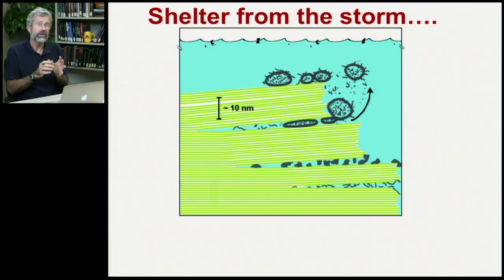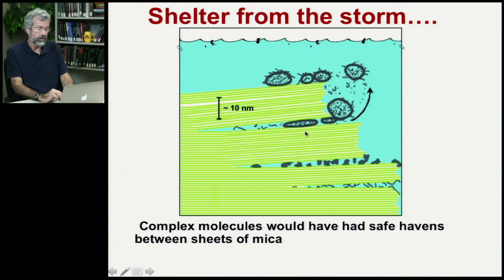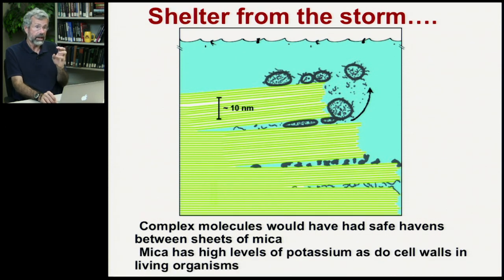So where would be a likely shelter from the storm of all the waves of oceans and everything going on? One possibility is that you might have had these early replicators out in the soup, but they found shelter between sheets of mica. These complex molecules, if they'd gotten into a safe haven like this, would have been able to manufacture their ribozymes and maintain access to them to replicate themselves over and over again. Mica is viewed as a likely first haven for early life because mica sheets have high levels of potassium, quite similar to the composition of cell walls in living organisms.